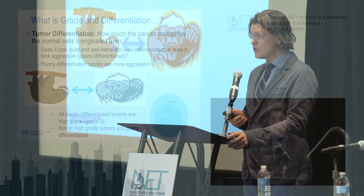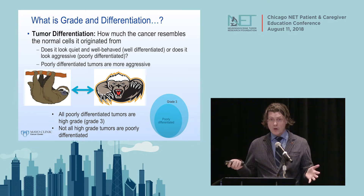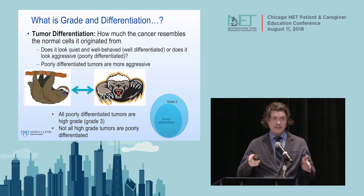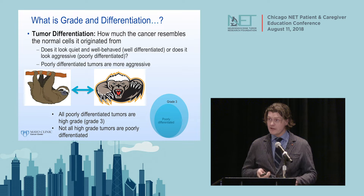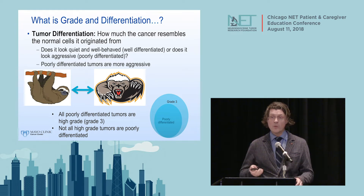Tumor differentiation is about how the tumor cells look. Do they look quiet and well-behaved, or do they look angry? How much do they resemble the organ they started in? An experienced pathologist can look at the slides and immediately tell if this is an aggressively behaving cancer or not. We don't always need the grade alone—the grade and differentiation are two different things that supplement each other, and we really need to do both.